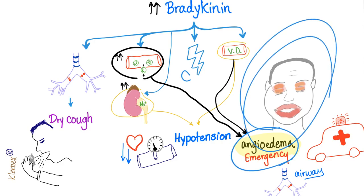Let me ask you a question. If you have a patient who has hereditary angioedema, should you give them ACE inhibitors? Never. ACE inhibitors are contraindicated for patients with hereditary angioedema. Why? Because ACE inhibitors will increase bradykinin, leading to angioedema.